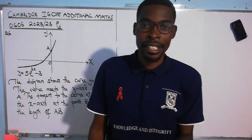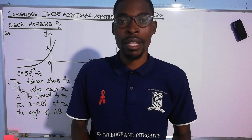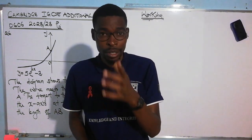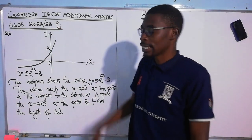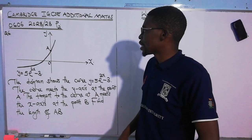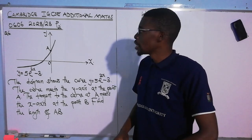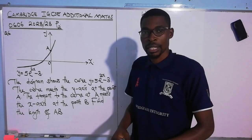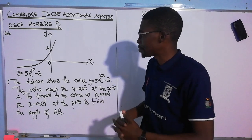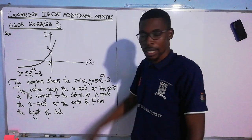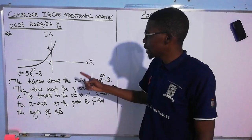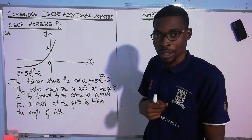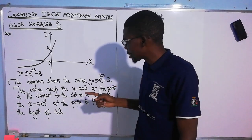Hello viewers, this is Mr. Banda, Mathematics Made Easy. In today's lesson we have a question coming from Cambridge GCSE Additional Maths 0606, 2023 Paper 2, question paper number 23 of 2023. By the way, happy festival season.